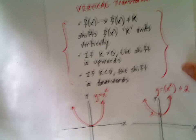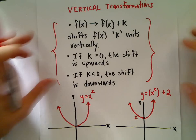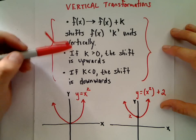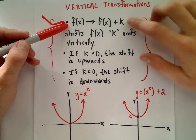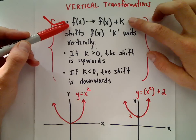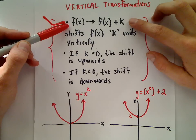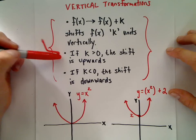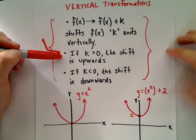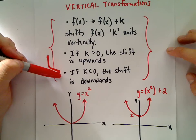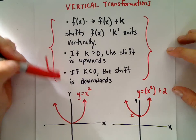Likewise, we can do vertical transformations. This is pretty much the same idea. Instead of replacing x, we add a number onto the outside. If we add k to the outside, it shifts k units vertically. This is more straightforward - if k is positive, it shifts upwards. If k is negative, it shifts downwards.